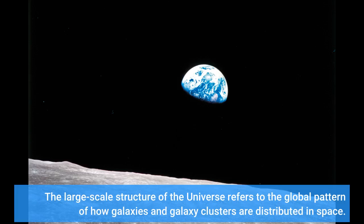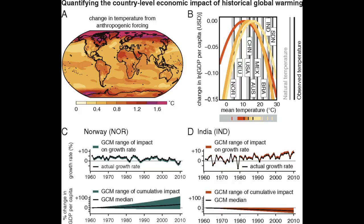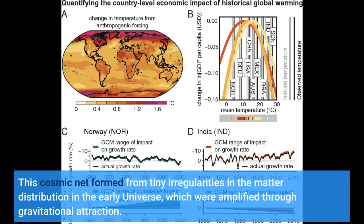The large-scale structure of the universe refers to the global pattern of how galaxies and galaxy clusters are distributed in space. This cosmic net formed from tiny irregularities in the matter distribution in the early universe, which were amplified through gravitational attraction.